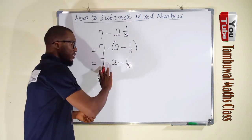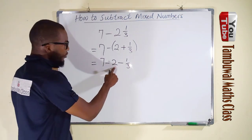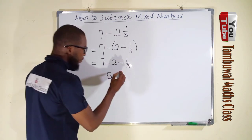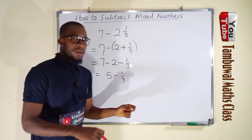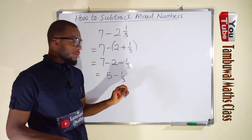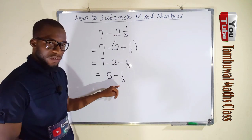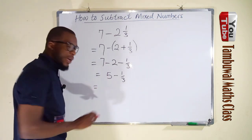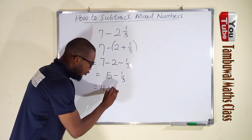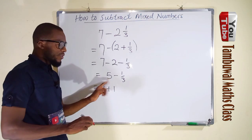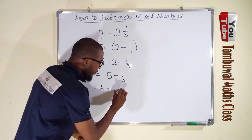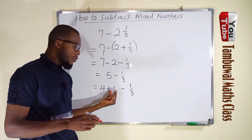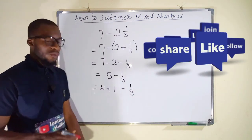We subtract whole numbers from whole numbers: 7 minus 2 is 5, but we still have minus 1/3. Since this is a mixed number problem, we don't want an improper fraction. We know that 5 can be written as 4 plus 1, and we still have minus 1/3. We can use this 1 because it is larger than 1/3, to subtract 1/3.